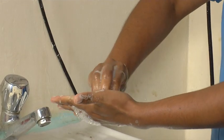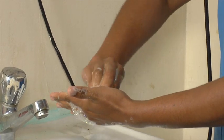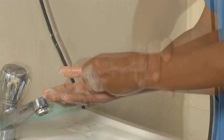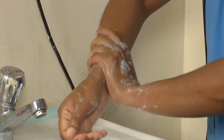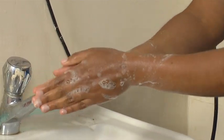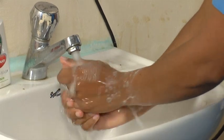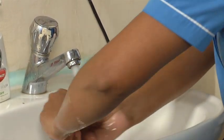Fifth, clean your nail tips by rubbing them against the opposite palms, one hand at a time. Lastly, rub and clean your wrists with the soap solution. Wash thoroughly after this to make sure all the soap is washed off properly.